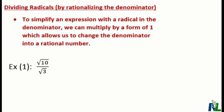In this video I will show how to divide radicals using a process called rationalizing the denominator. Note that rationalizing the denominator means we are going to multiply by a form of 1 which allows us to change the denominator into a rational number. So basically what that means is we don't want any square roots left in the bottom of our division or quotient.